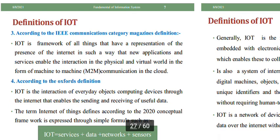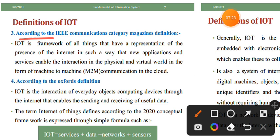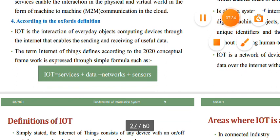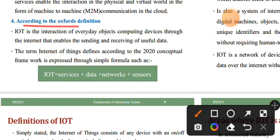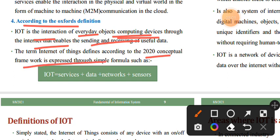According to the IEEE Communications Magazine's definition, IoT is a framework. According to the Oxford Dictionary, IoT is the interaction of everyday objects — computing devices connected to the internet, sending and receiving data. Devices interact by sending and receiving data over the internet.